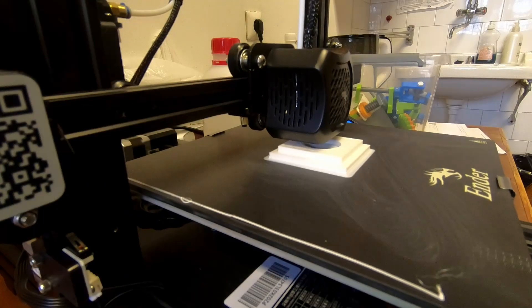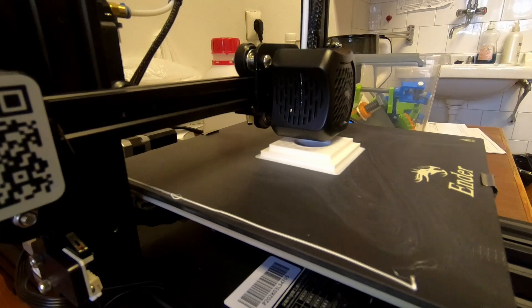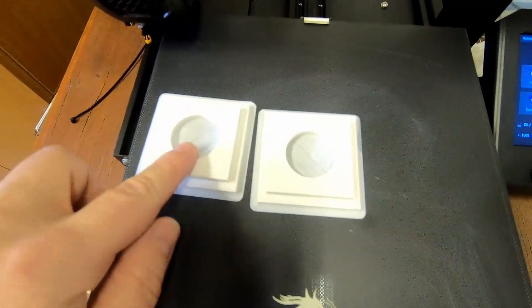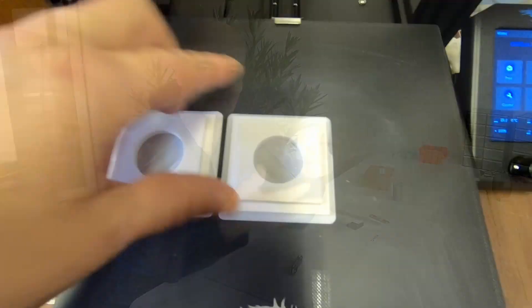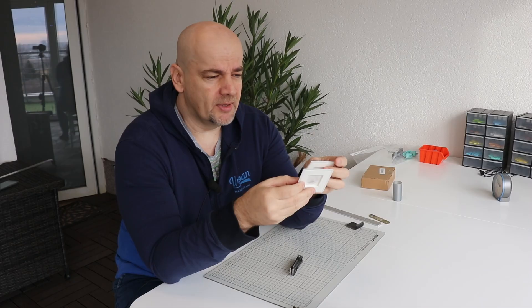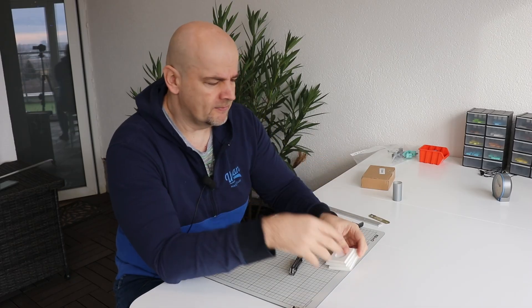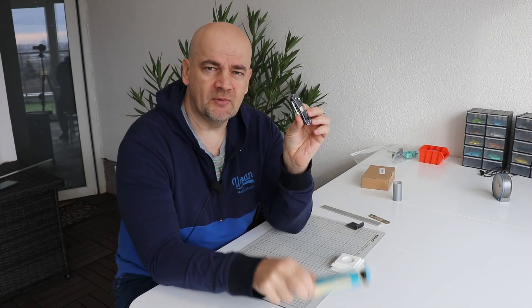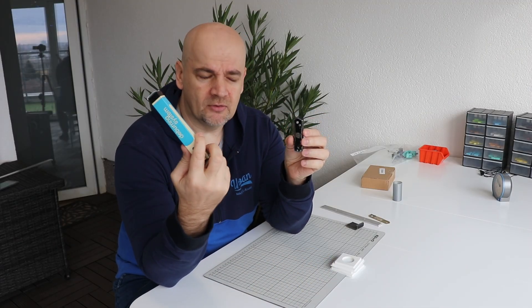So in this video I will compare it. I printed this part with the brim and with the sacrificing layer. I will clean it with a knife and with the deburring tool and I will tell you my opinion. Small disclaimer: I'm very comfortable using this knife but this will be the first time I'm using this deburring tool.